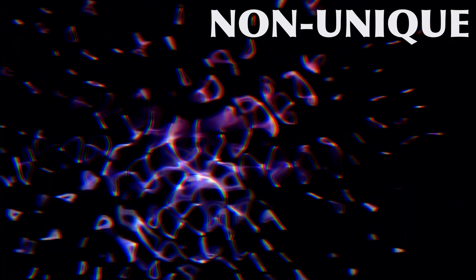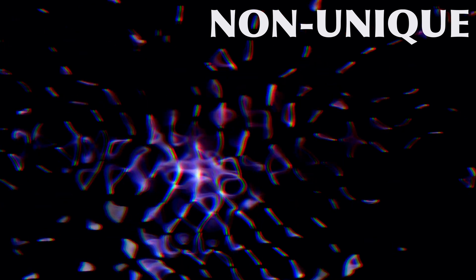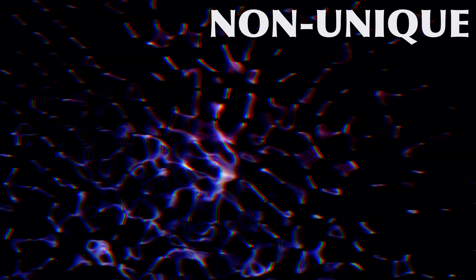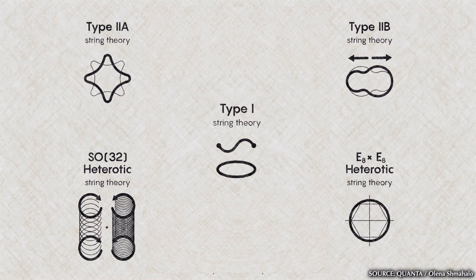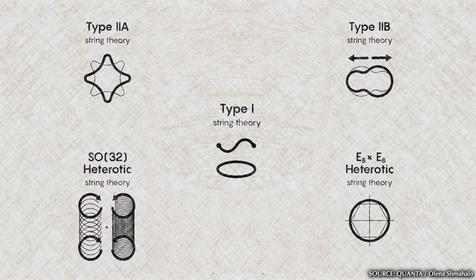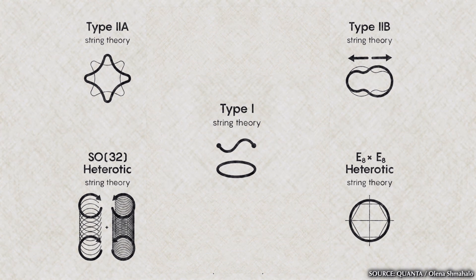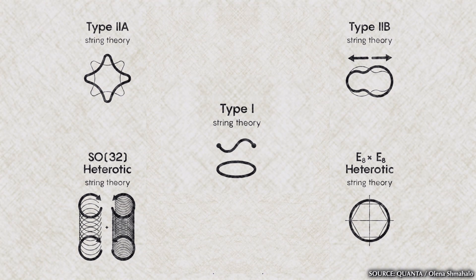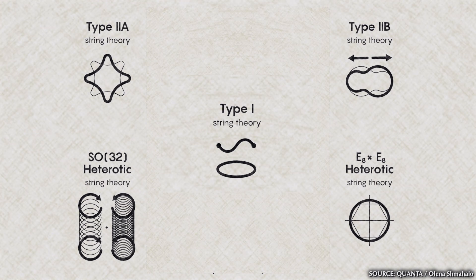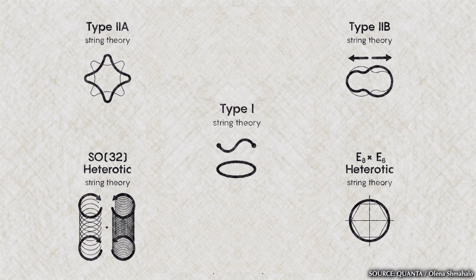A lot of additional people were flooding into string theory at this point, and one of the consequences was that soon string theory was found to be non-unique — meaning there were a number of different string theories. Eventually five variants were defined: Type 1, Type 2a and 2b, SO32 heterotic and E8 by E8 heterotic.